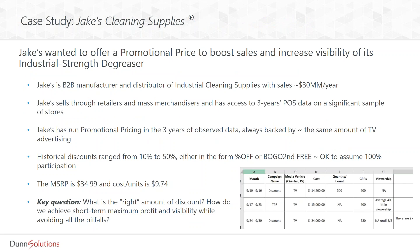Let me give you a little bit of background. The numbers and scenario are real, but we keep the name confidential — so let's call this client Jake's Cleaning Supplies. The client wanted to offer a promotional price to boost sales and increase visibility of their industrial strength degreaser. Jake's is a B2B manufacturer and distributor of industrial cleaning supplies with sales of roughly 30 million per year. They do not sell directly to consumers, but through retailers and mass merchandisers. They bought three years of POS data on a significant sample of stores.